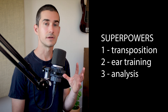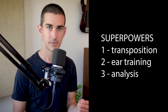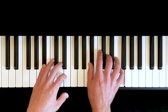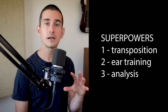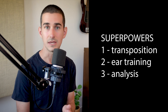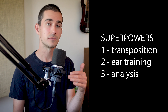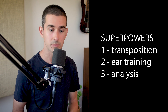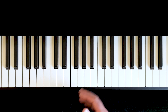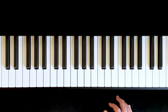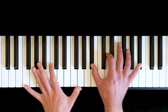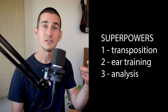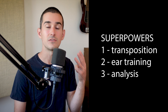Superpower number three is closely tied to the ear training benefit, but it's understanding function. When you play songs and instead of thinking of chord names you're thinking of functions — one, four, six, five — you start to recognize patterns between different songs, even if they're not in the same key. Numbers have not only made it easier for me to learn things by ear, they've made it a lot easier to memorize music and much easier to write music, because when I know I'm in a certain key, I have a lot of great guesses for what chord could work well next.